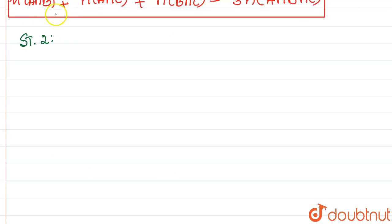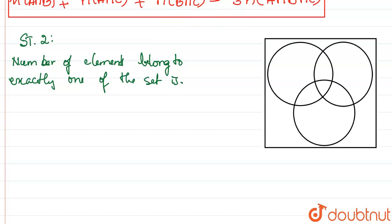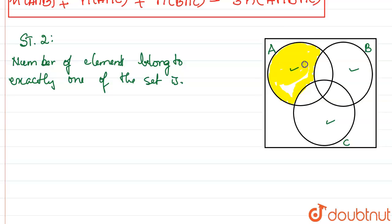Statement 2 says that the number of elements belonging to exactly one of the sets A, B, C. Let us draw the Venn diagram again. This is set A, this is B, and this is C. The number of elements belonging to exactly one of the sets means only the exclusive part of A, only the exclusive part of B, and only the exclusive part of C. We name these three parts as part 1, part 2, and part 3.